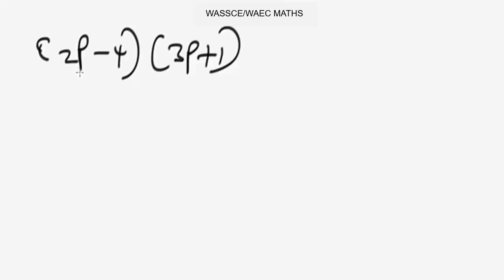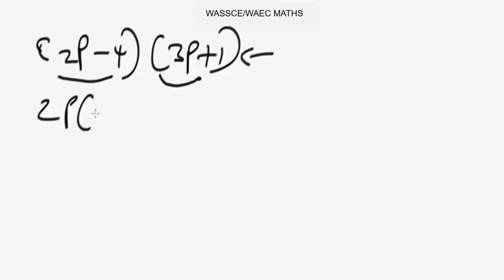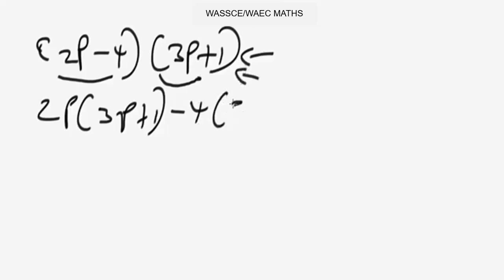Pay close attention — this is very important. For double brackets, the easiest way is: firstly, we take the first term in the left bracket and multiply everything in the right bracket. So 2p multiplies everything in the bracket 3p plus 1, then negative 4 also multiplies everything in the bracket 3p plus 1.